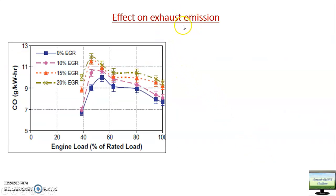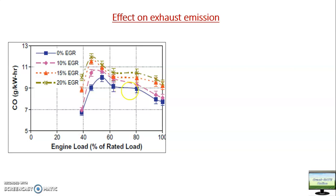Now we will see the effect on emissions. For CO, without EGR the CO is lowest, and with EGR the CO percentage is increasing — illustrating the trade-off between NOx and CO emissions. However, for 10% EGR the increase is not very significant. At around 80% load, CO is about 9 g/kWh without EGR and around 9.2–9.5 g/kWh with 10% EGR, so the increase is not significant for 10% EGR.